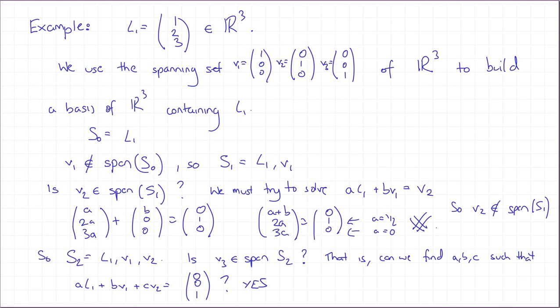And the answer here is yes, you can find those scalars. What you've got on the left is A plus B in the first place, and then 2A plus C in the second place, and 3A in the third. And you want this to be equal to (0,0,1). But it's easy to solve this. So we have to have A is equal to 1/3 from the last entry of the vector. Then C is minus 2A, so minus 2/3, and B is minus A, so minus 1/3. So that solves this equation. Therefore, V3 is in the span of S2.